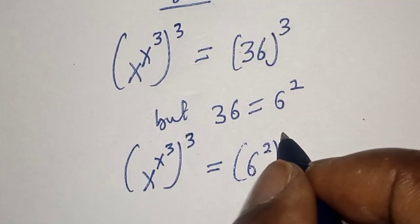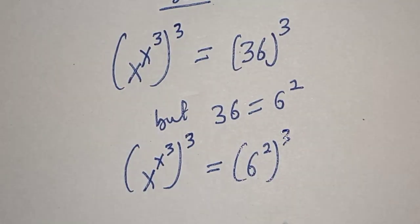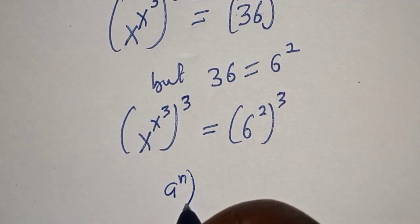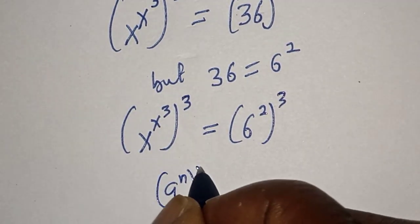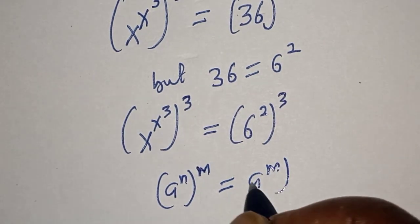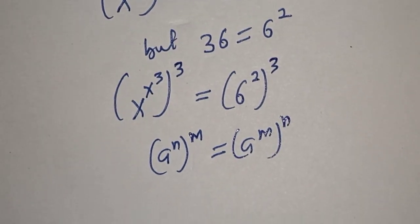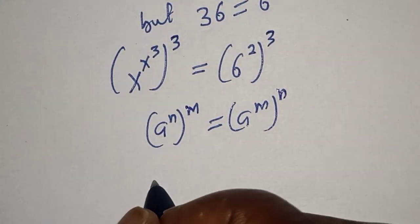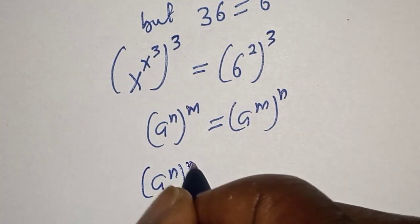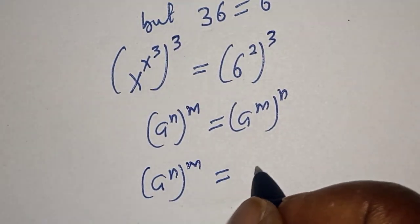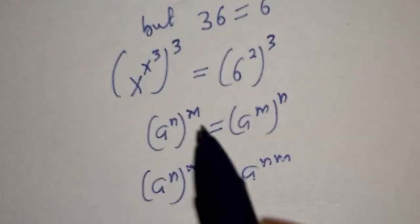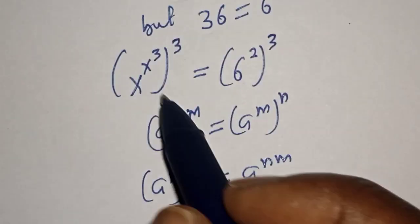Remember this rule: if you have a raised to power n, to the power of m, it is equal to a raised to power m to the power of n. Also, if you have a raised to power n raised to power m, it is equal to a raised to power n times m.